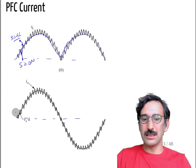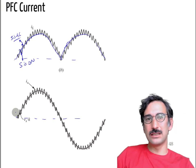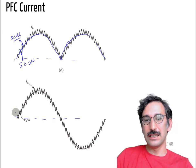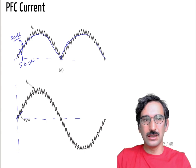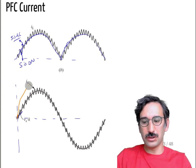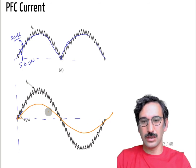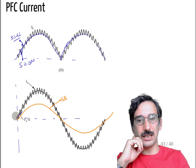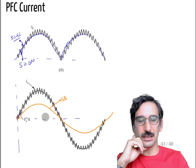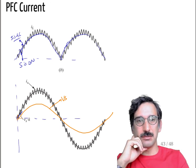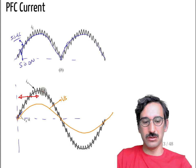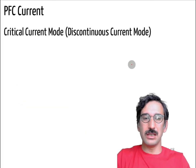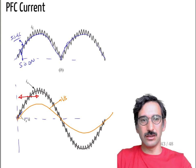The source current has a high-frequency ripple, but if you filter that out you will have a nice sinusoidal current. Normally PFCs are run at unity power factor to coincide with your source voltage, but technically by adjusting your switching sequence and reference signals you can move your current forward or backwards — leading or lagging power factor can also be achieved.